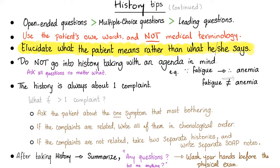The worst approach is a leading question — for example, suggesting the chest pain is central, dull, achy, increased by exertion, relieved by rest or nitroglycerin, radiating to the jaw and left arm. You've just told the patient the diagnosis. Let the patient describe it. Do not ask leading questions. And when you write the history, use the patient's own words, not medical terminology.